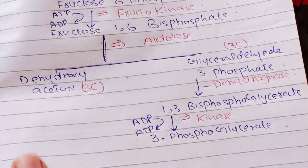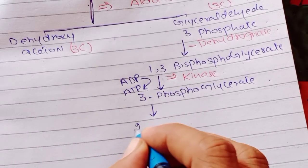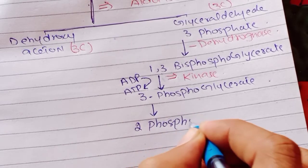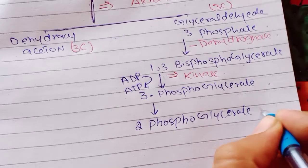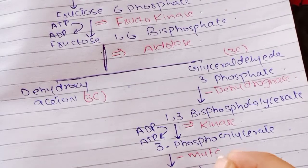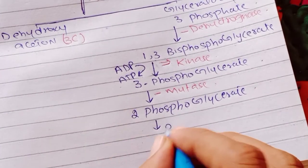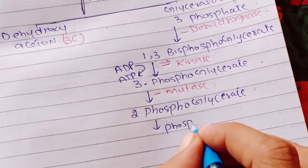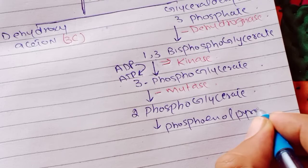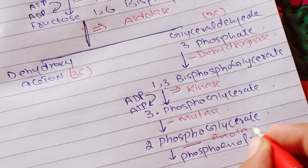3-phosphoglycerate will be converted into 2-phosphoglycerate. This step is catalyzed by the enzyme starting with M — that means Mutase. Then 2-phosphoglycerate will be converted into phosphoenolpyruvate, catalyzed by the enzyme starting with E — that means Enolase.